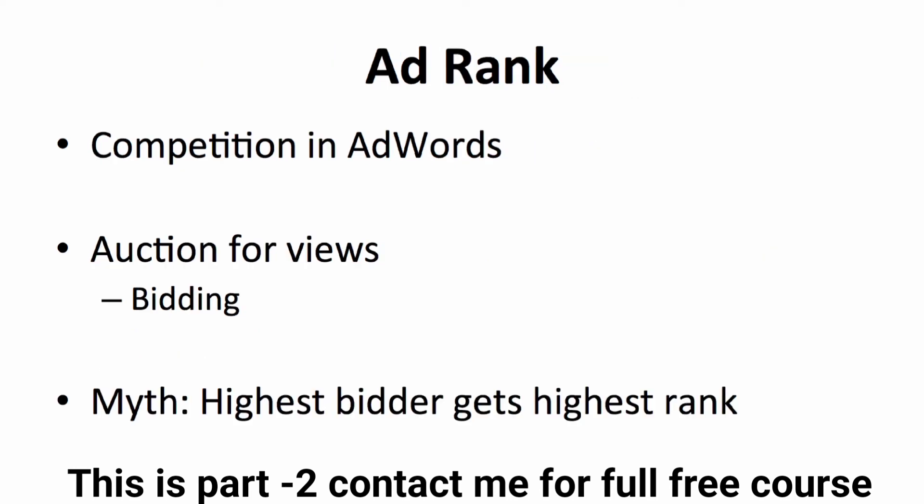The ultimate goal of bidding with keywords is to move your video to the top of the ad rank. The higher your rank, the better the exposure. Ad rank is decided by Google to determine video placement. One of the factors affecting your ad rank is the auction for views — how much you bid. However, it's not only based on how much you bid; there are other factors as well.